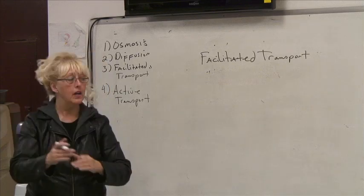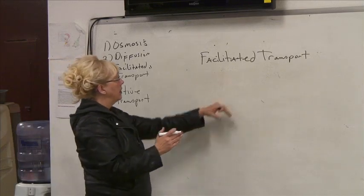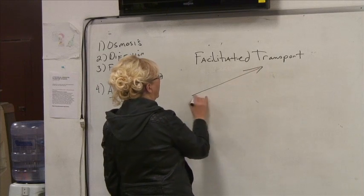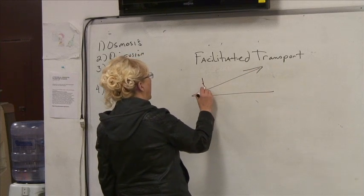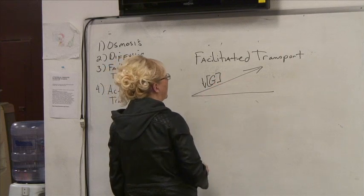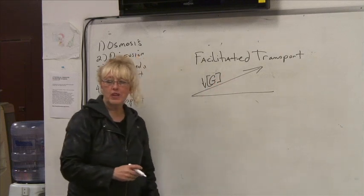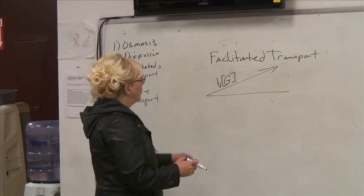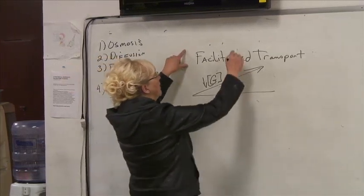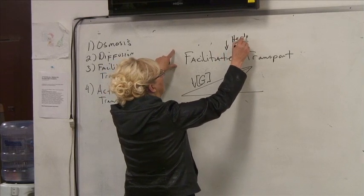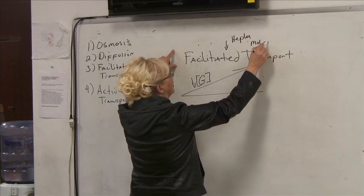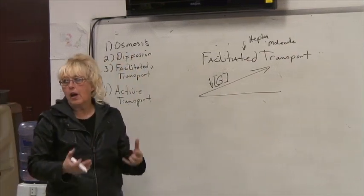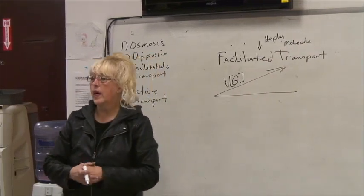They're all on an uphill gradient; they all need energy. So, facilitated transport — an uphill gradient. We have an input of energy, an energy molecule to be able to do this. We need ATP to be able to generate this movement. Facilitated transport — think of this as a helper molecule. It's facilitating another molecule to get through the gradient.